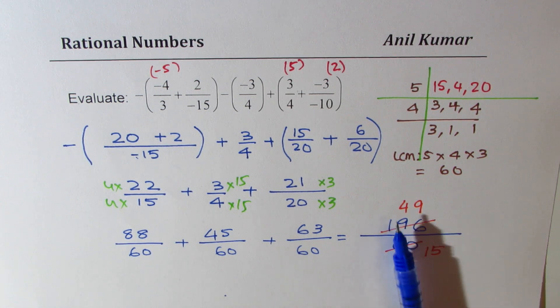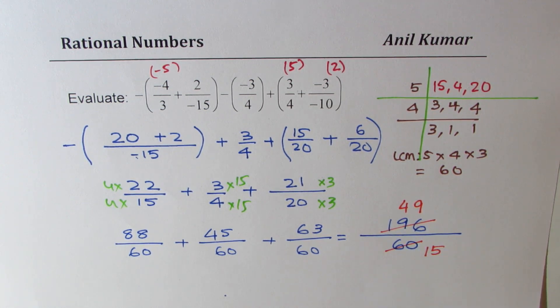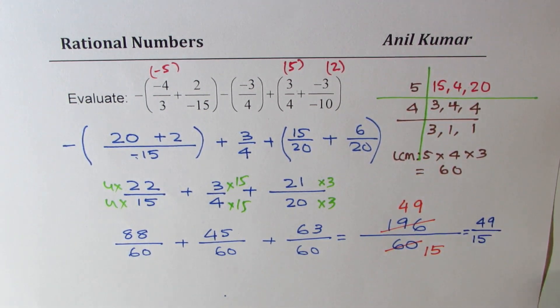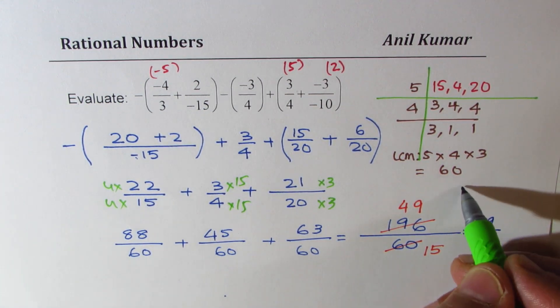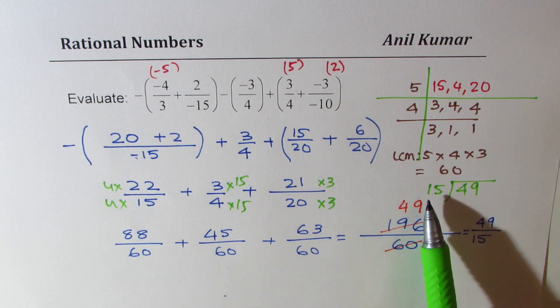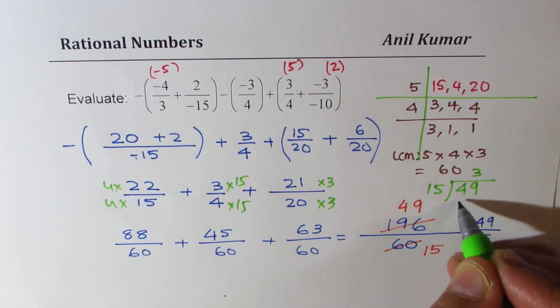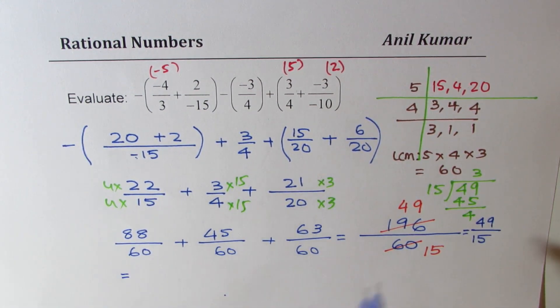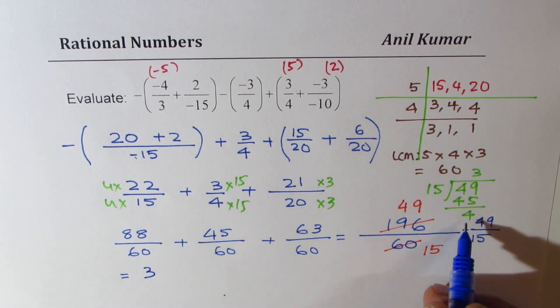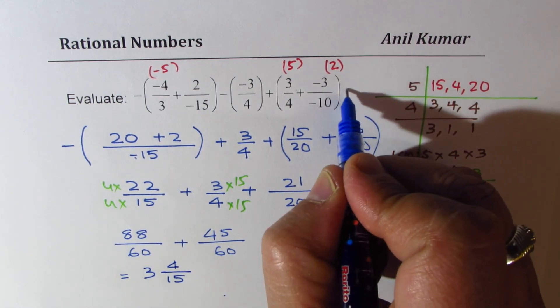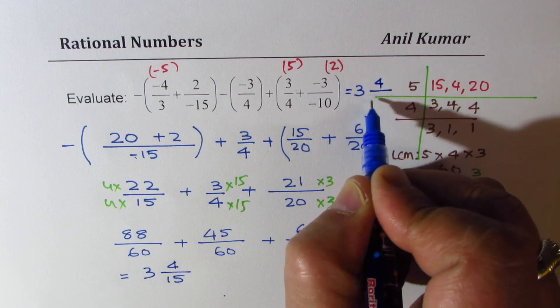Now, 49 over 15 could be written as mixed numbers. So, let me first write this answer as 49 over 15. Now, some of you will prefer to write this as mixed numbers. So, let's divide 49 by 15, correct? So, when you do that, 49 times 3 is 45. We get 4 as our remainder. So, I could also write this as 3 whole 4 over 15. Do you see that? So, that is my final answer. 3 whole 4 over 15.